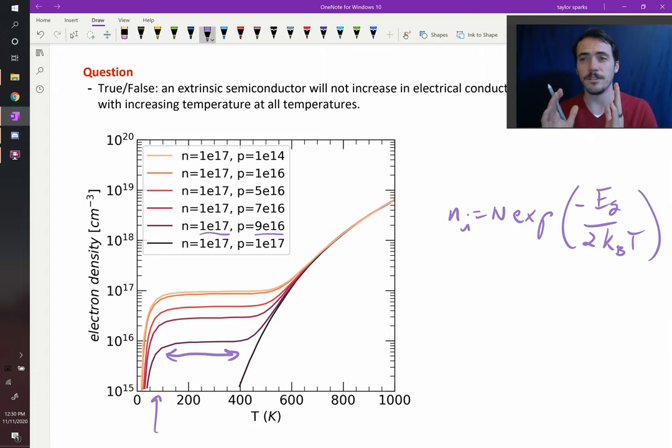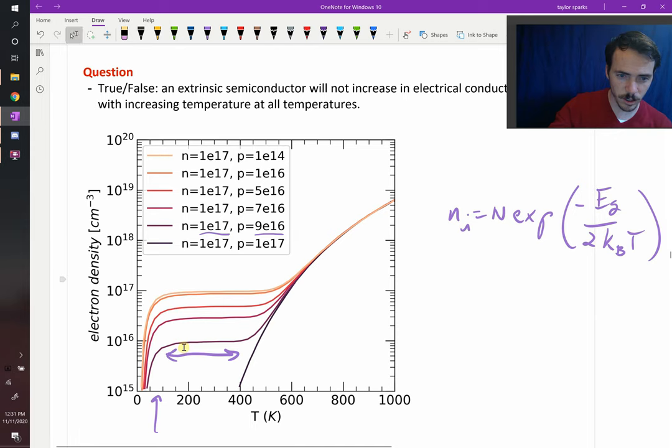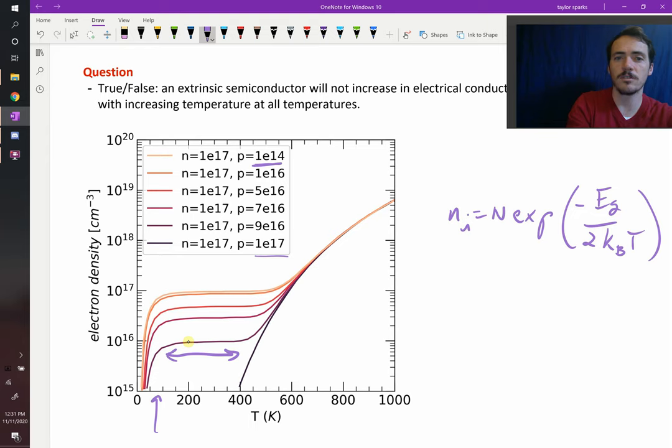That's why these flat lines are not totally flat. They are technically still increasing a little bit. And then as you tune this ratio, as you make it more and more n-type doping, the number of holes is decreasing from 1e17 down to 1e14, but your number of electrons is the same. What you're seeing is that number of electrons is higher and higher, and it's looking more and more flat, but it's never actually flat all the way across there.